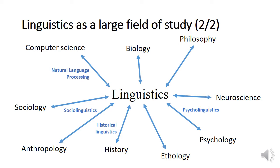Linguistics is also connected to psychology — how do babies and infants learn language, for instance? It can be connected to ethology, because we want to compare our way of communicating with the ways other animals exchange information, like monkeys, apes, dolphins, or dogs. Linguistics is also related to history, and there is a field called historical linguistics, where you study how languages change through time, how they evolve, and what happened in the past has influenced the way languages are today.